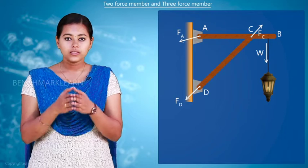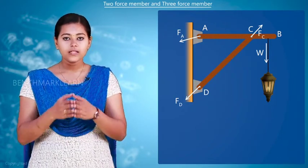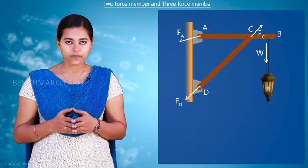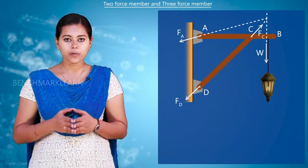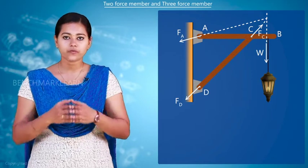So the reaction will be acting in the opposite direction as shown, and the resultant will be as shown. Joining the lines of action, we can see that they meet at a common point. So the member AB is called a three force member.